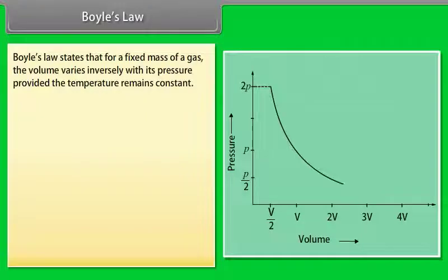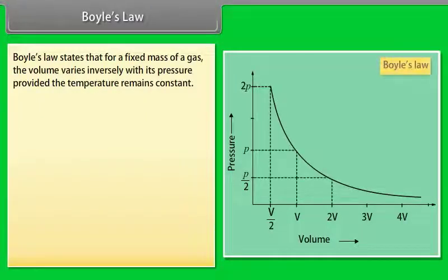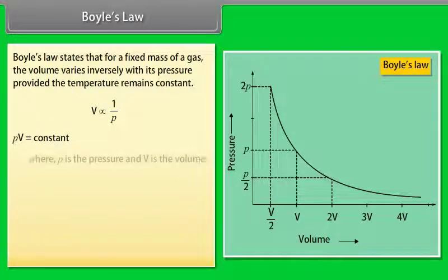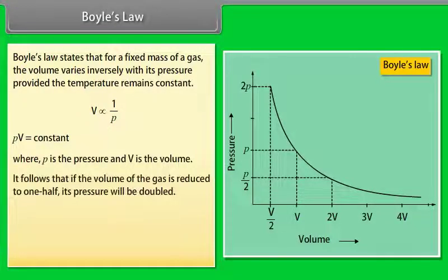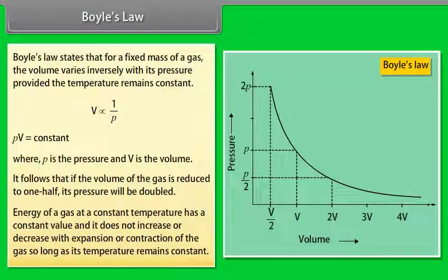Boyle's law states that for a fixed mass of a gas, the volume varies inversely with its pressure provided the temperature remains constant. PV is equal to constant, where P is the pressure and V is the volume. It follows that if volume of the gas is reduced to one half, its pressure will be doubled. Energy of a gas at a constant temperature has a constant value and it does not increase or decrease with expansion or contraction of the gas so long as its temperature remains constant.